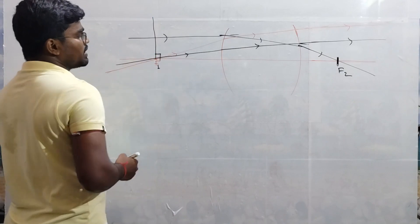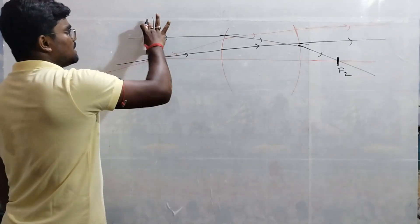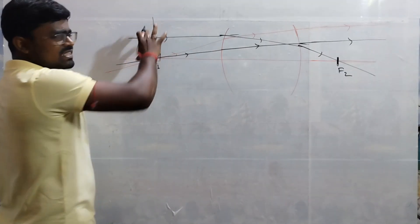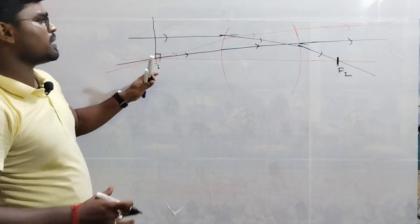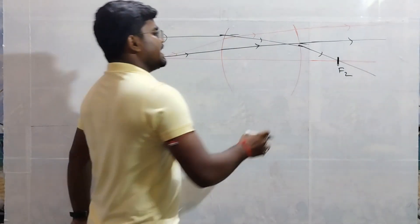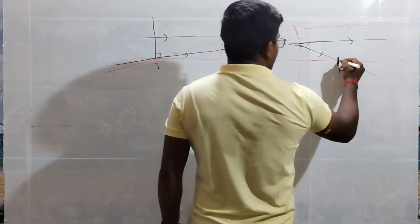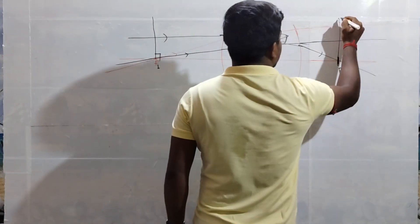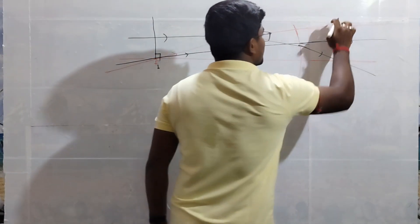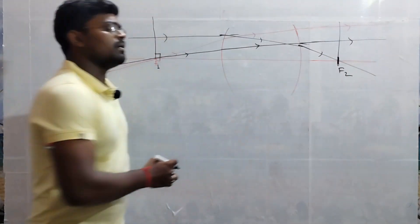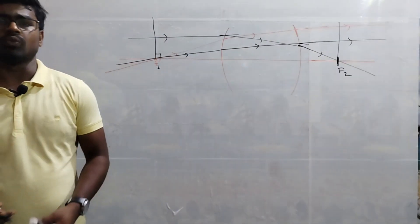If I draw a perpendicular at the first principal focus, that plane is called focal plane 1. Similarly, a perpendicular at F2 gives focal plane 2.